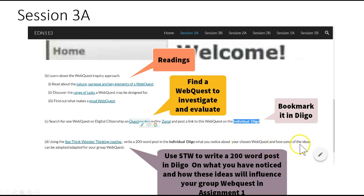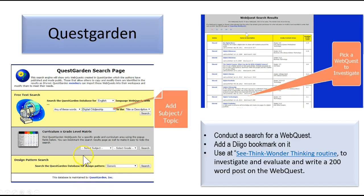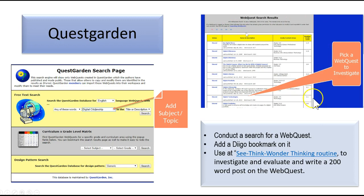Tell us how some of the ideas can be adapted or adopted for your WebQuest. Looking at QuestGarden, if you click on the link provided, you will find that this is what the page looks like. This is your search page. You can just type in Digital Citizenship in your subject or topic, and then it will take you to the search results, which is a whole list of different websites that you can go and have a look at.